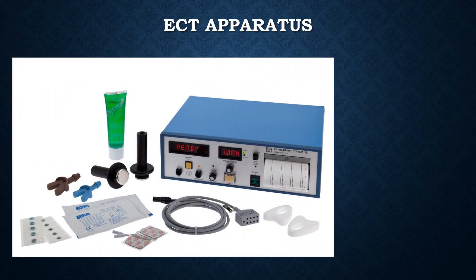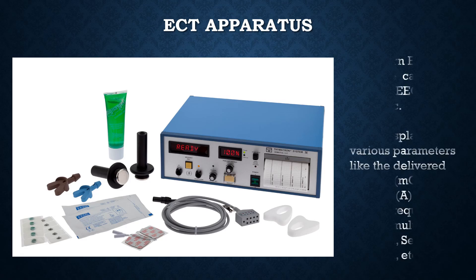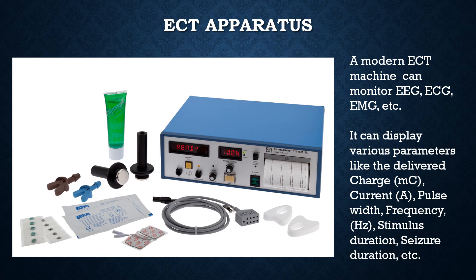This is the ECT setup — the ECT machine, the electrodes, and other bits of equipment. A modern ECT machine can monitor electroencephalogram (EEG), electrocardiogram (ECG), and electromyogram (EMG). It can also display various parameters like the delivered charge, current, pulse width, frequency, stimulus duration, and seizure duration.